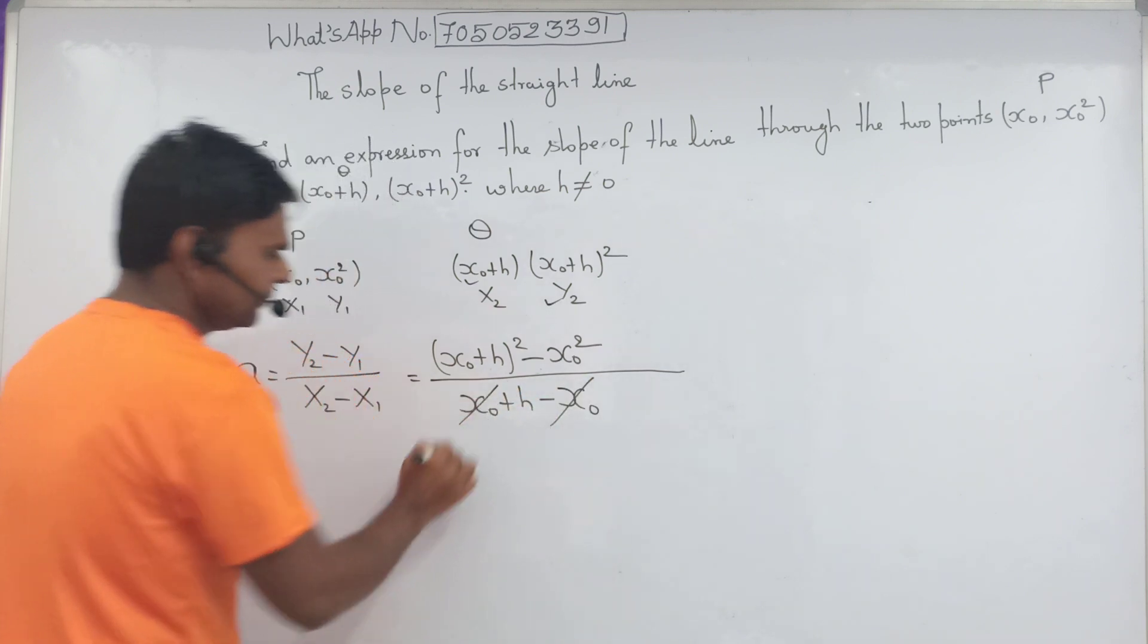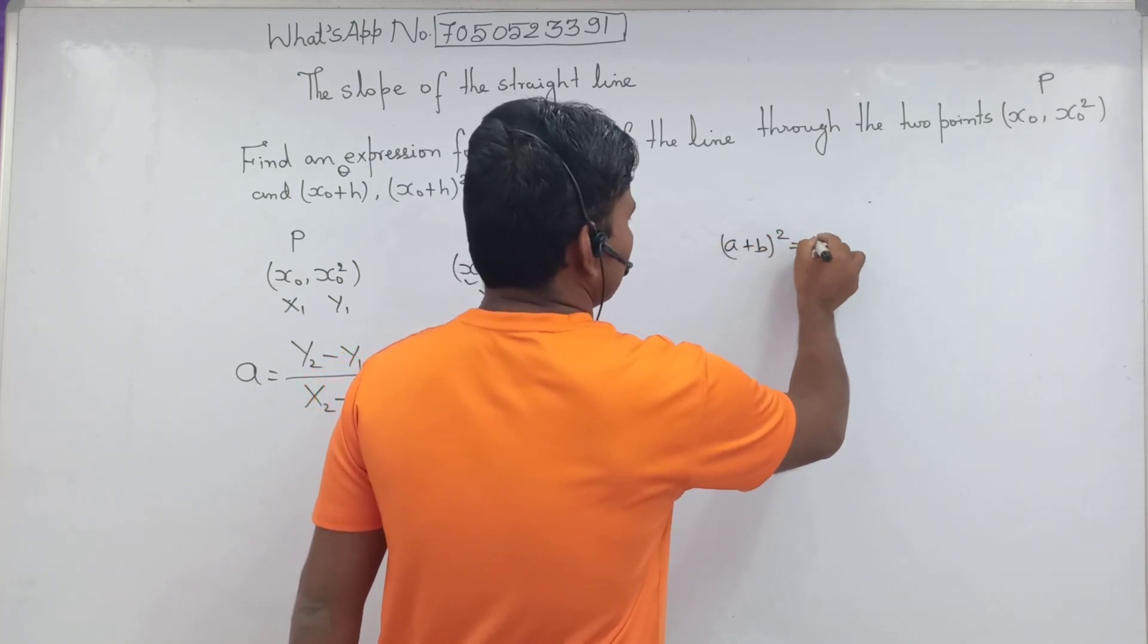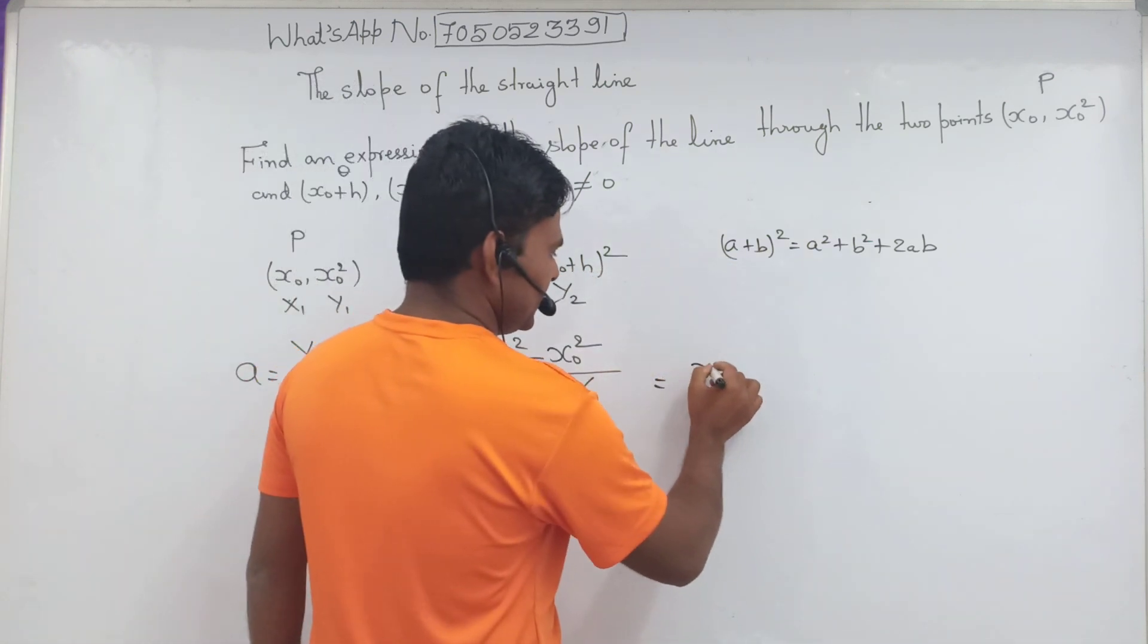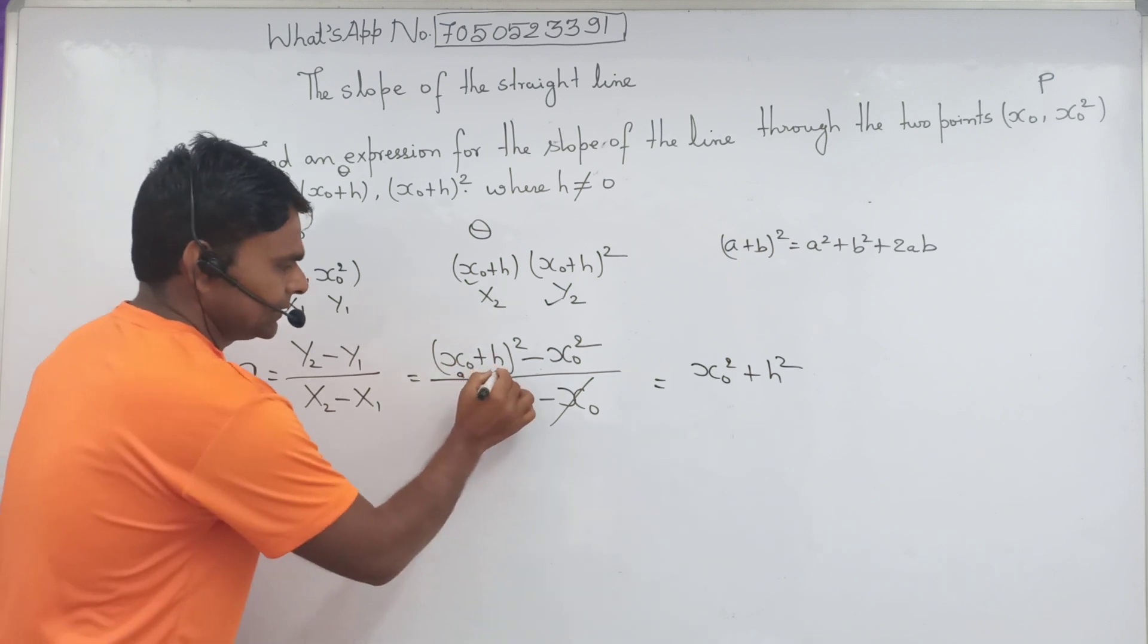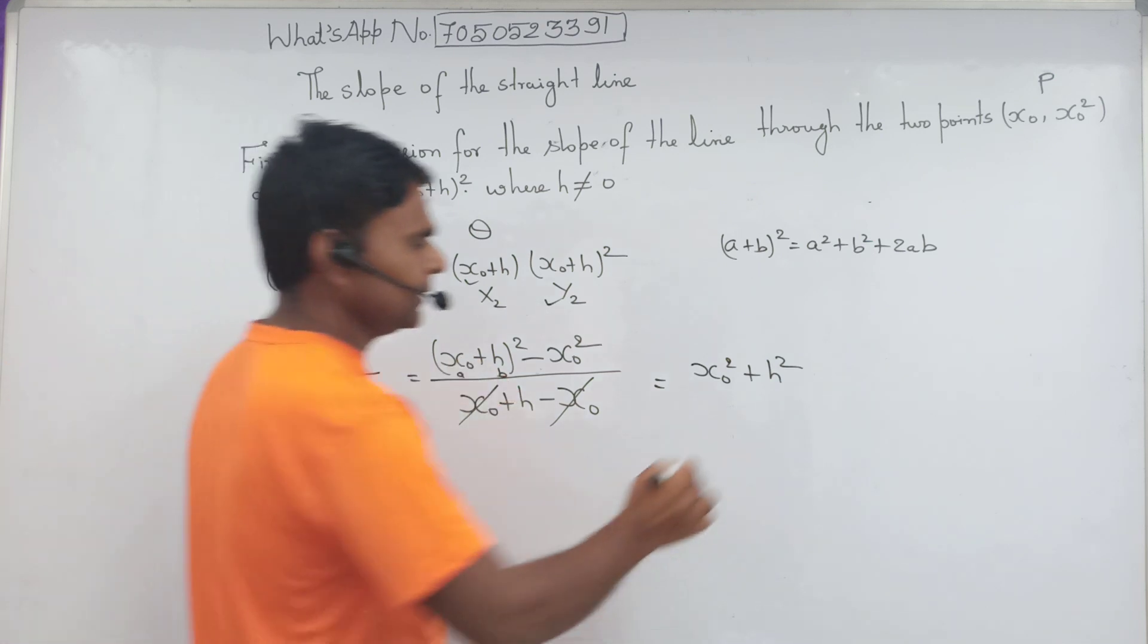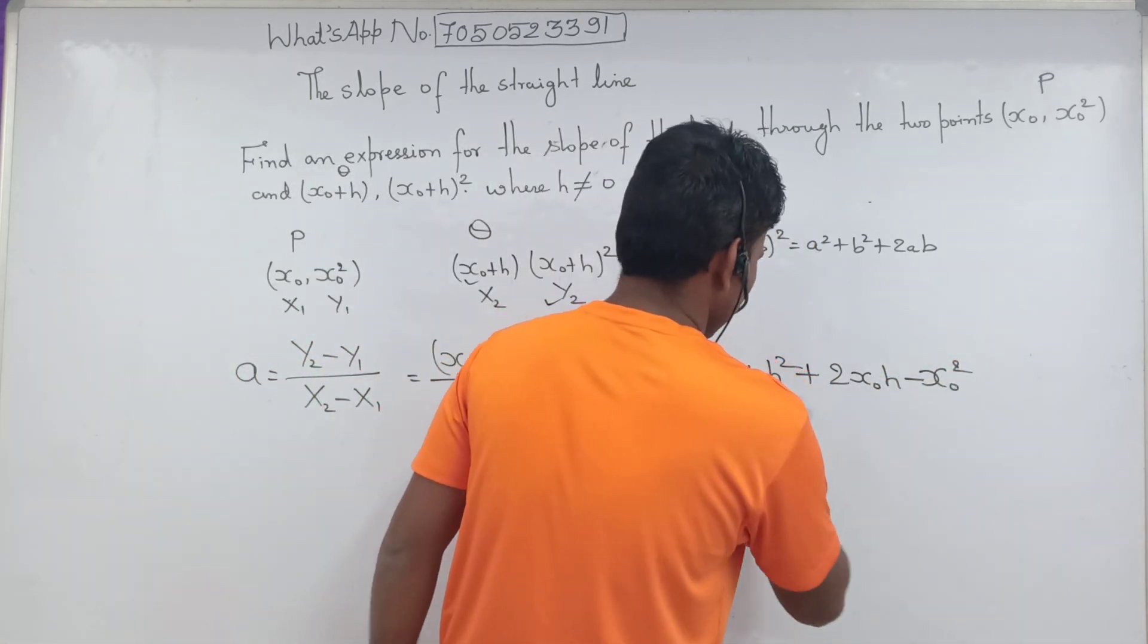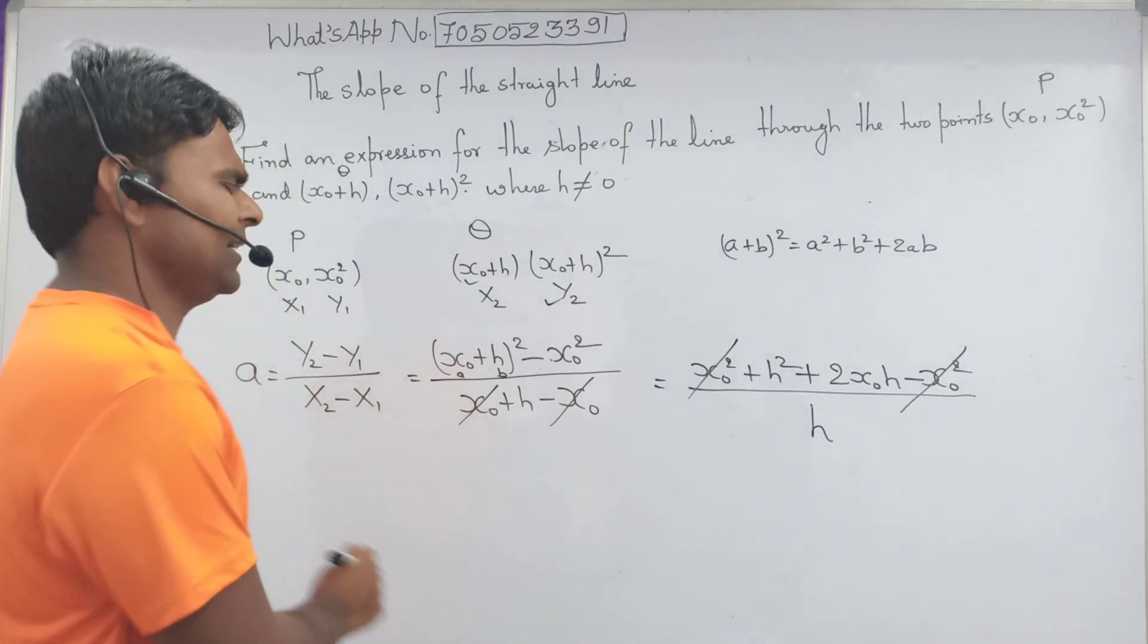x0 plus x0 minus x0 cancel. We need to break according to the formula a plus b whole square. x0 square plus h square. x0 is treated a, h is treated b. x0 square plus b square, that is h square, plus 2ab, that is 2x0h, minus x0 square by h. x0 plus x0 minus x0 square cancel.